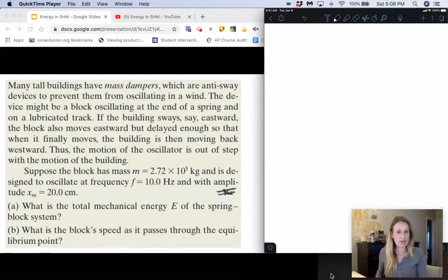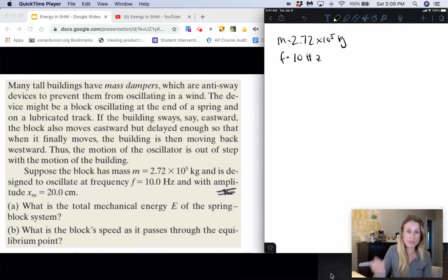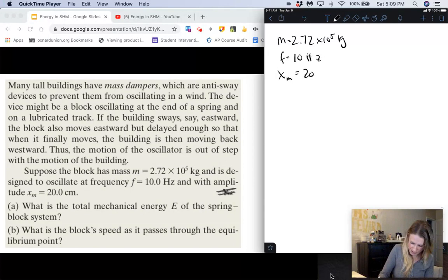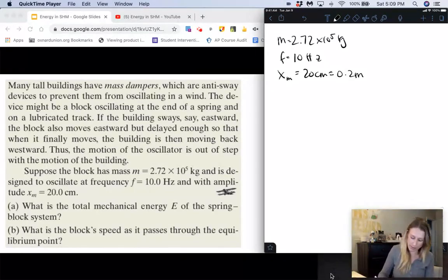So suppose a block of mass m equals 2.72 times 10 to the fifth kilograms and is designed to oscillate at a frequency f of 10 hertz with an amplitude x_m of 20 centimeters, which of course is 0.2 meters. We want to know A, what's the total mechanical energy E of the system, and B, what's the block speed as it passes through the equilibrium point?